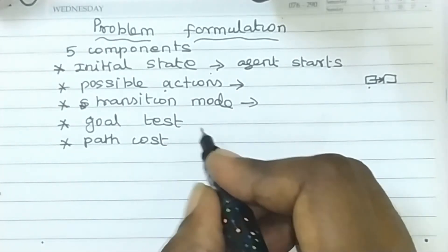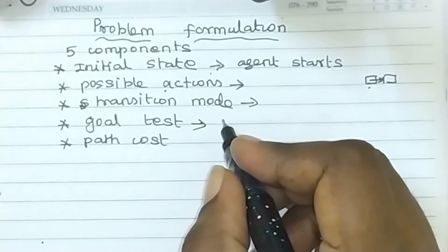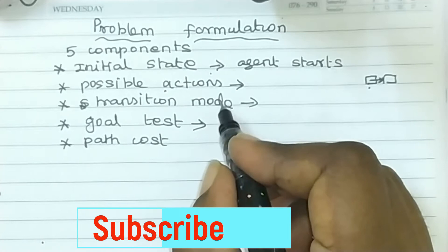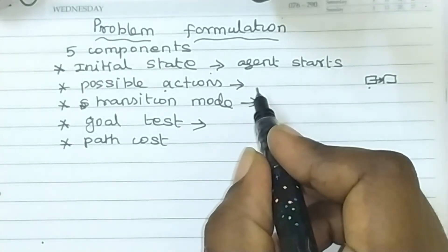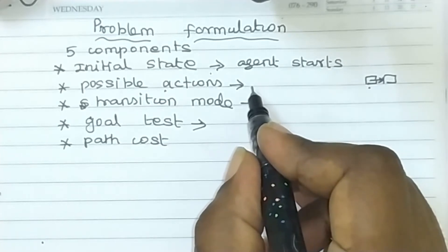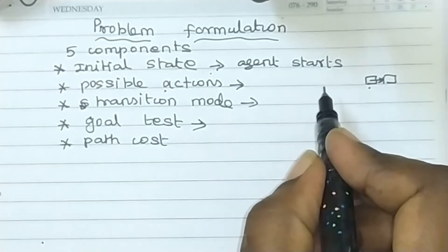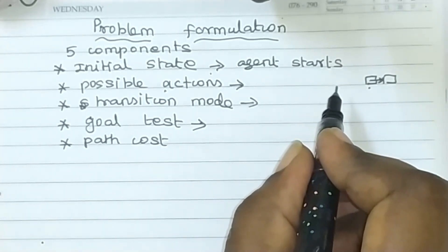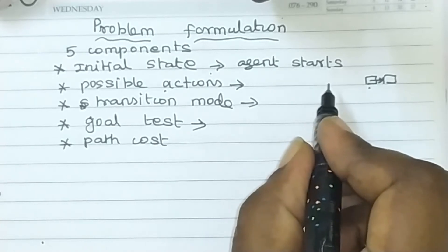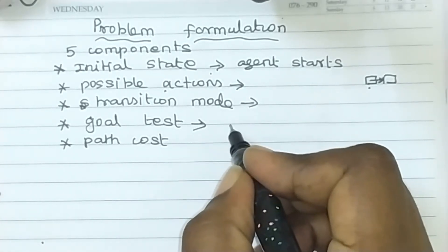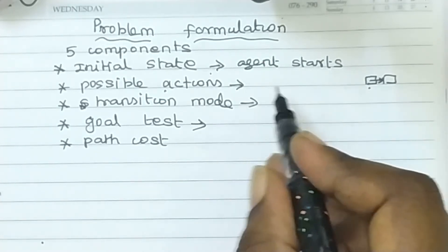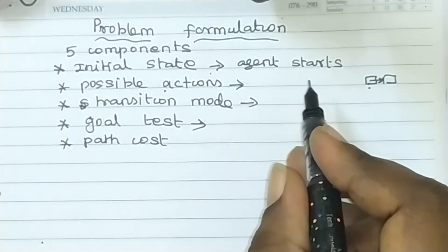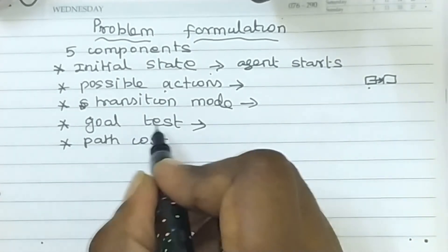The fourth component is the goal test. The goal test determines whether a given state is a goal state. As the agent performs actions and the state is changed from one state to another, the goal test checks whether that particular state is the goal state.